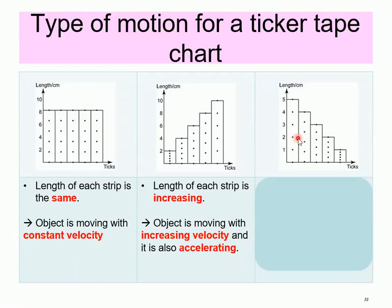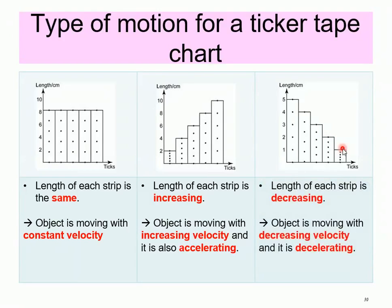But for this last diagram, the first strip is long, but the second, third, fourth, and fifth get shorter, shorter, shorter, and even shorter. So the length of each strip is decreasing, therefore the object is moving with decreasing velocity and it is said to be decelerating. Because the first strip's distance is further compared to the last strip, the velocity is decreasing, therefore it's considered as decelerating.